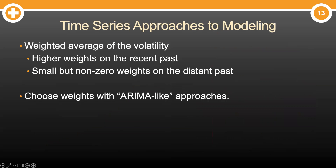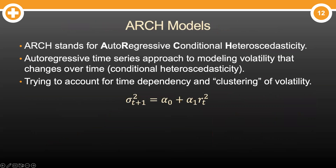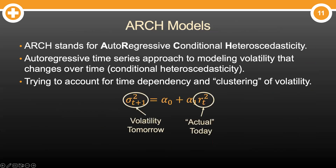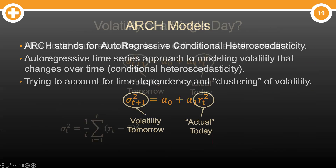Just like with ARIMA models, we started first with autoregressive models, which leads to the autoregressive conditional heteroscedasticity, or ARCH, model created by Robert Engle in 1982. It takes an autoregressive approach to modeling volatility, predicting the volatility within the actual value of the volatility today. Let's quickly dig in.